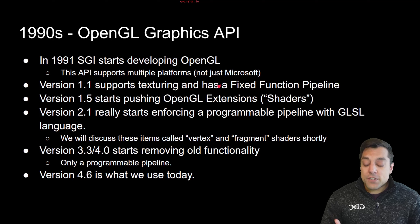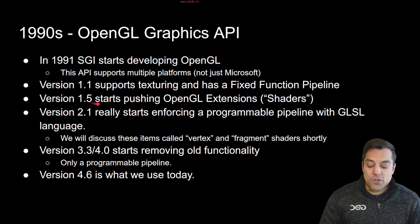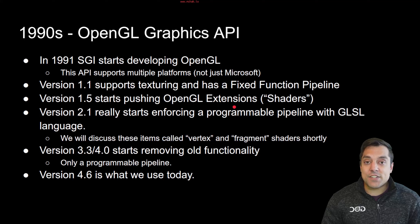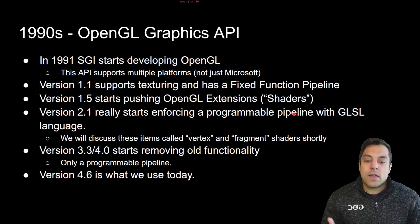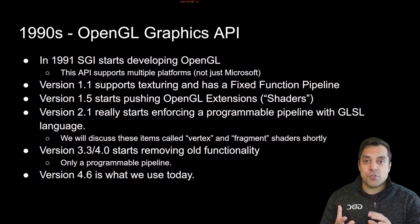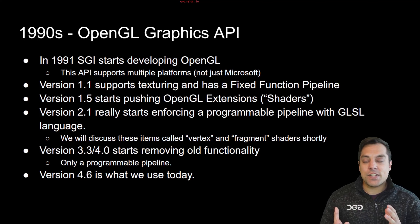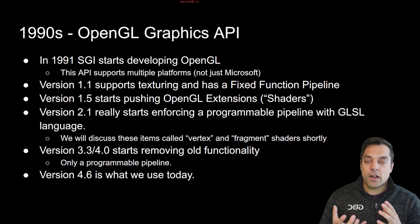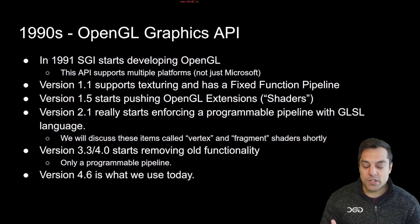One of the major leaps was around version 1.5 where OpenGL started having extensions. This is where we started getting into things like shaders. Basically, something called the Architecture Review Board allowed companies to start submitting extensions based on their hardware, so you could do cooler things with OpenGL.